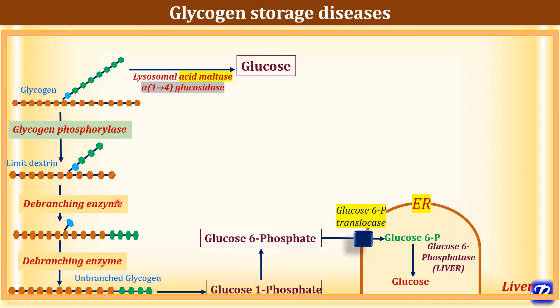Let's see various glycogen storage diseases. If there is a defect in glucose 6-phosphatase enzyme in liver, it results in type 1A glycogen storage disease, called Von Gox disease. In this Von Gox disease, there is accumulation of normal glycogen. It is an autosomal recessive disease which affects liver, kidney, and intestine. The various clinical features are hypoglycemia, ketosis, acidosis with increased lactic acid, increased uric acid, and hepatomegaly.